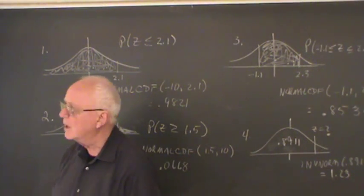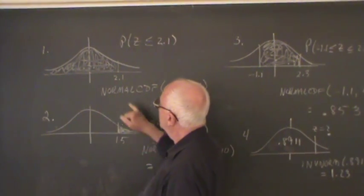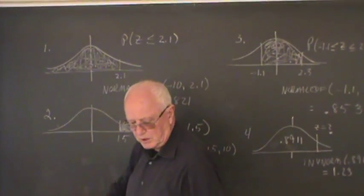The first problem I'd like to work with is the probability that Z is less than or equal to 2.1. In drawing a picture, which always helps, we're looking at this particular probability.